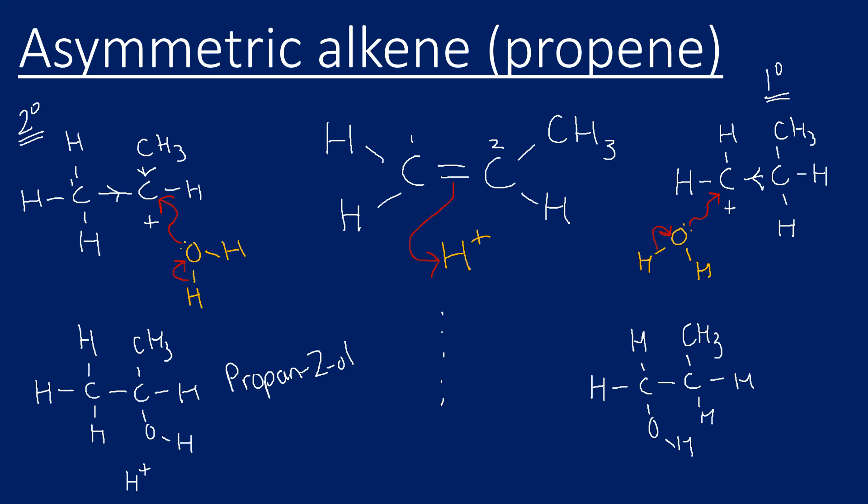We see we've got a mixture of products, but one will be in the majority. Propan-1-ol is our minor product, and it's the minor product because it formed via a less stable primary carbocation. The major product formed via a more stable secondary carbocation.